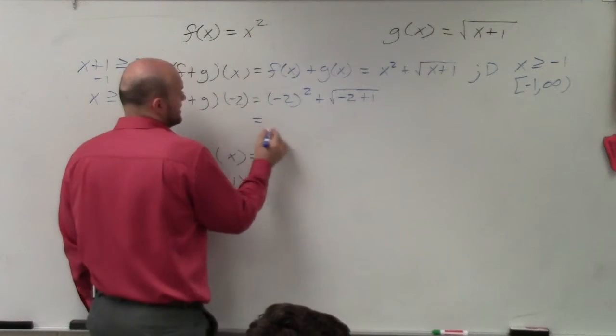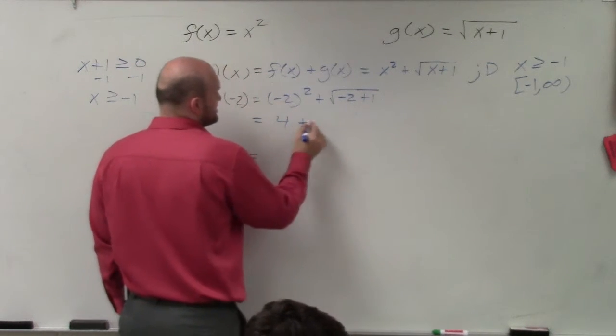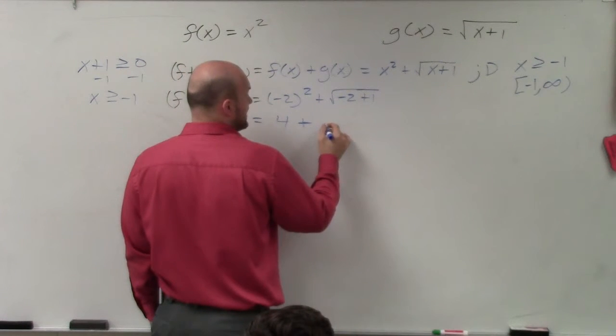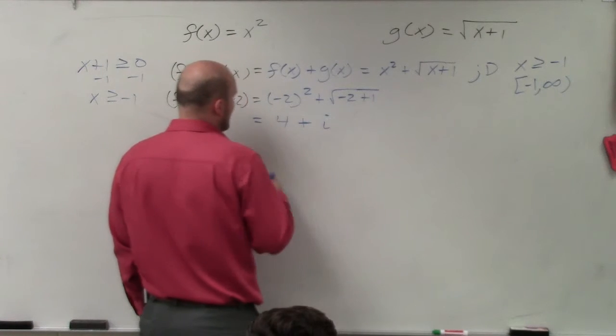which we actually end up getting. So it's 4 plus, and then in this case would be square root of negative 1, which is i.